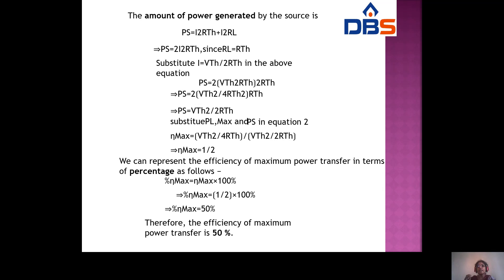We can represent the efficiency of maximum power transfer as a percentage: percentage η_max = η_max × 100% = 0.5 × 100% = 50%. Therefore the efficiency of maximum power transfer theorem is always 50%.